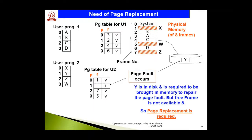When a page fault occurs, the operating system searches for the desired page on the hard disk. Once found, some existing page needs to be replaced with the new page. The page in question is on disk and needs to be brought into memory to repair the page fault, but there is no free frame available. So we must replace an existing page from system memory — the decision of which page to replace is determined by studying various page replacement algorithms.